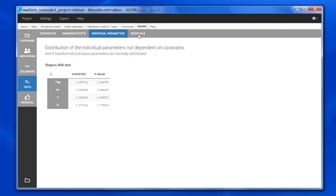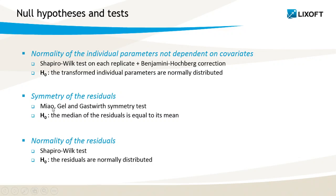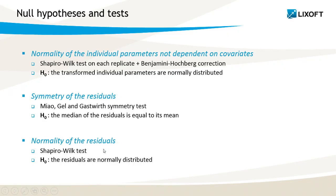The last tab is for the residuals. First, we test if they are symmetrical around zero, and then if they are normally distributed. For the symmetry, we use the Miao-Gel and Gastwirth symmetry test, that tests if the median of the residuals is equal to its mean, and for the normality of the residuals, it's again the Shapiro-Wilk test. Note that the p-values in these sections are not color highlighted, because deviation from symmetry or normality is hard to interpret and to fix for the residuals.